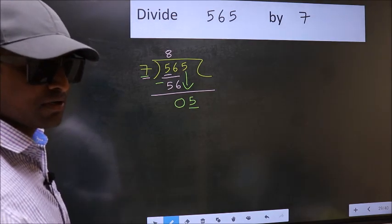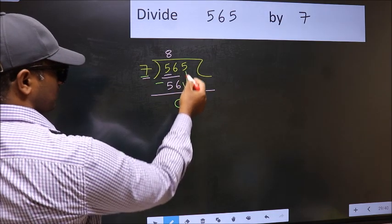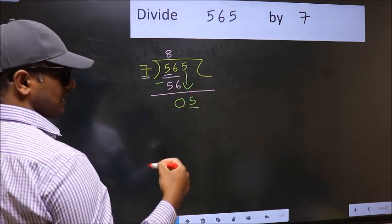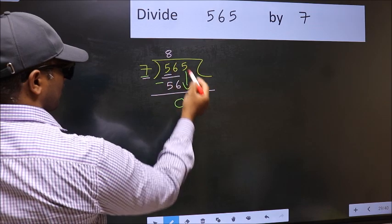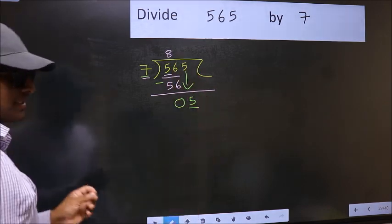Why is it wrong? Because just now you brought this number down, and in the same step, you want to put dot and take 0, which is wrong.